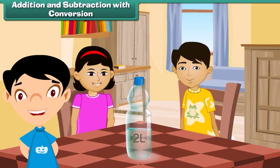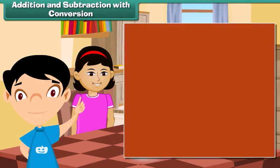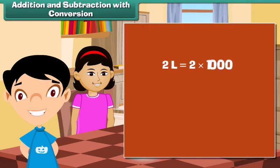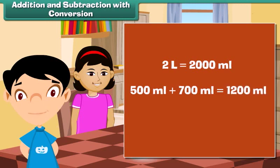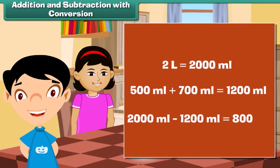Addition and subtraction with conversion. Soha's water bottle holds 2 liters of water. Soha drank 500 milliliters and her friend Govind drank 700 milliliters. Let's find out how much water is left. Total water in the bottle is 2 liters, which is 2000 milliliters. Total water consumed is 500 milliliters plus 700 milliliters, which equals 1200 milliliters. Water left is 2000 milliliters minus 1200 milliliters, which equals 800 milliliters.